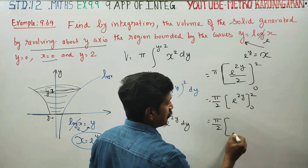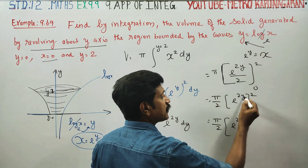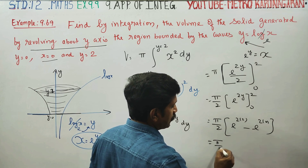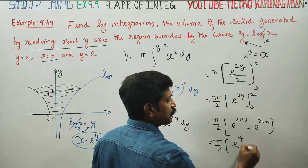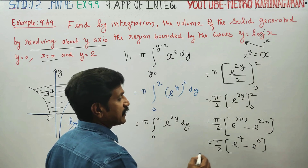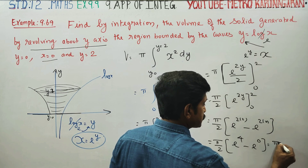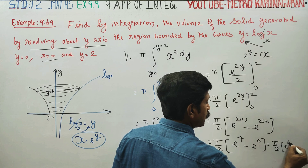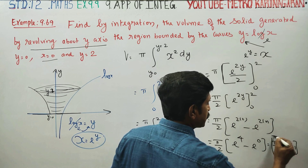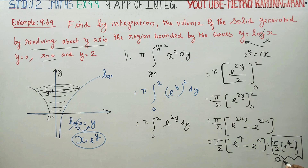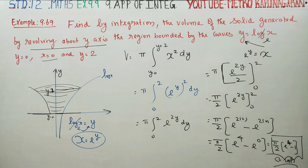Substituting: upper limit gives e to the power 2 times 2, which is e to the power 4. Lower limit gives e to the power 2 times 0, which is e to the power 0 = 1. The final answer is π by 2 times (e to the power 4 minus 1) cubic units. This is the required volume.